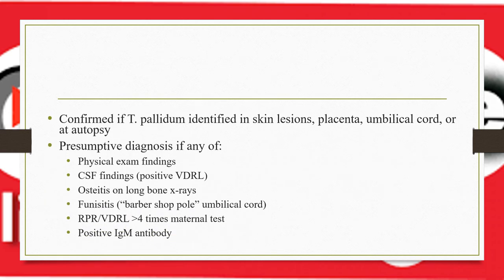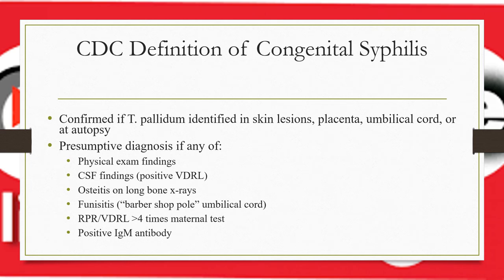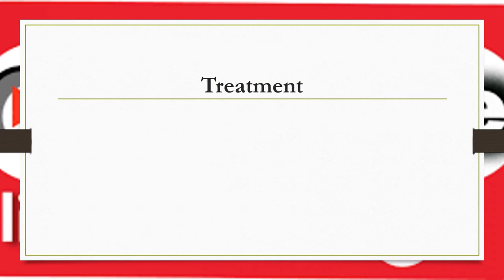Per CDC definition, congenital syphilis is confirmed if Treponema pallidum is identified in skin lesions, placenta, umbilical cord, or at autopsy. Presumptive diagnosis is made if physical examination suggests syphilis, CSF VDRL is positive, periostitis is seen on long bone X-rays, funisitis is present, VDRL titer is greater than four times maternal titer, or a positive IgM antibody is detected after delivery.